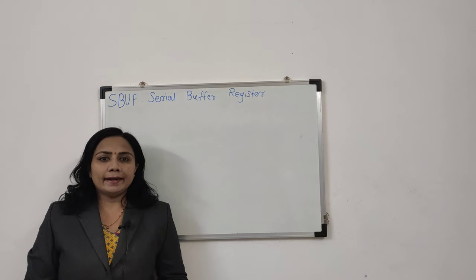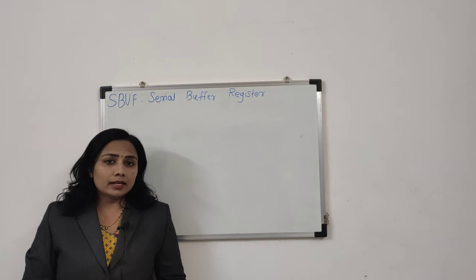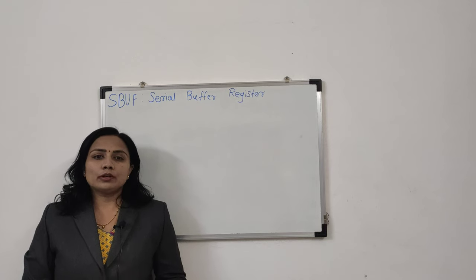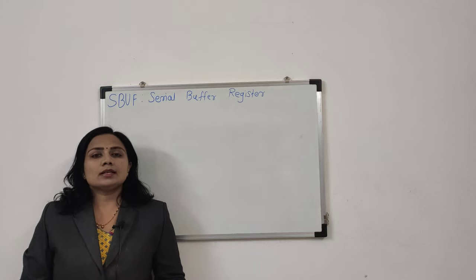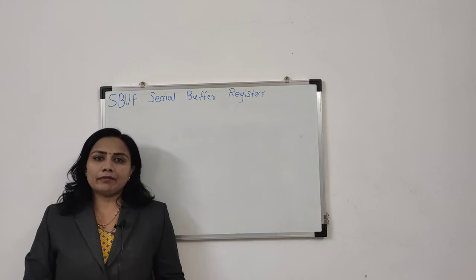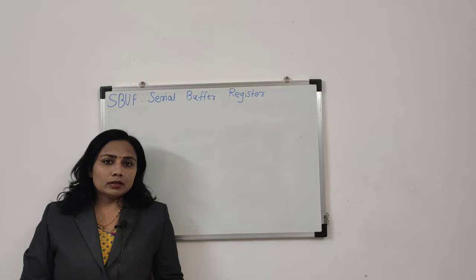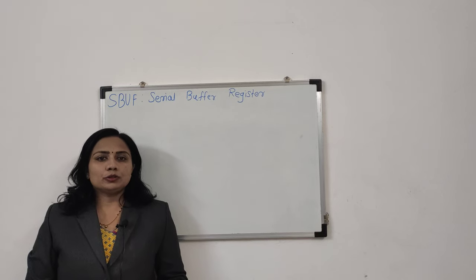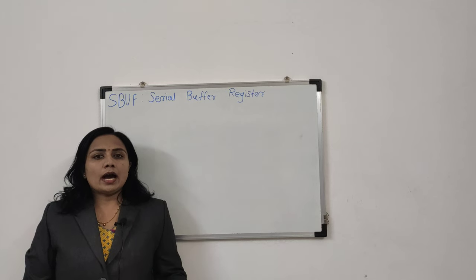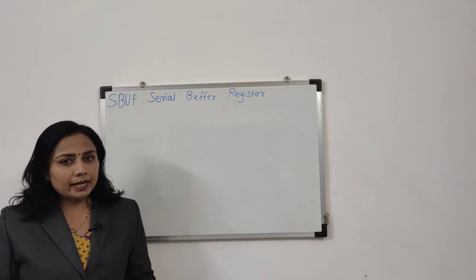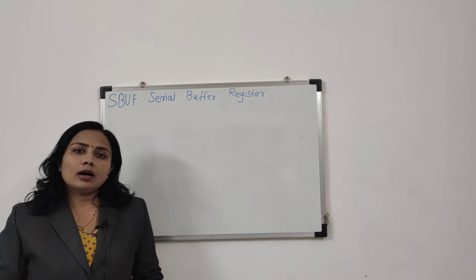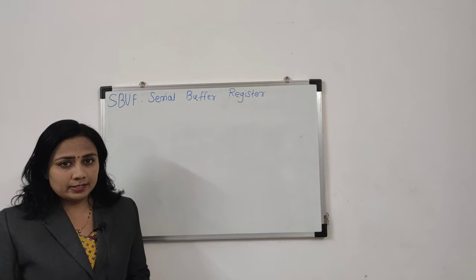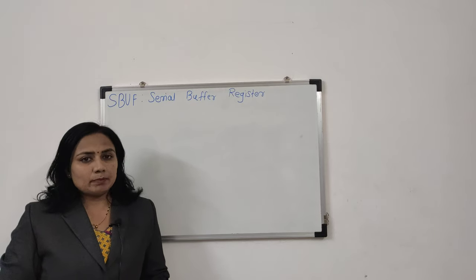Whenever we want to transmit data using the TXD line of the microcontroller, that particular byte of data should be available in the SBUF register first. Similarly, whenever we are going to receive data on the serial port, that byte value of the data should first be available in the SBUF register. So whether you want to transmit data using the TXD line or receive data on the RXD line, that value is first available in the SBUF register. This SBUF register is byte addressable.